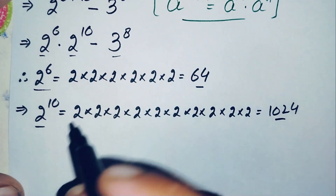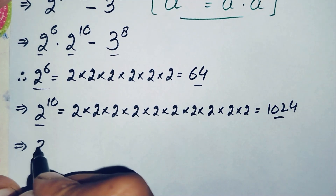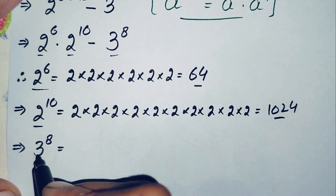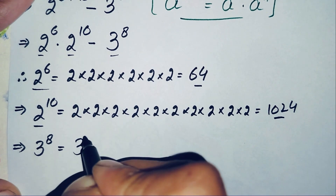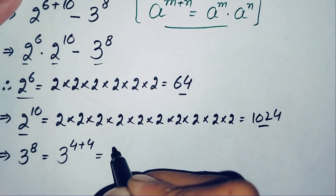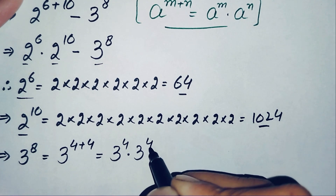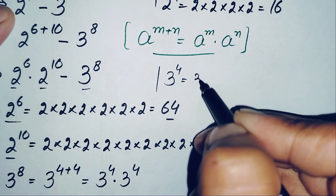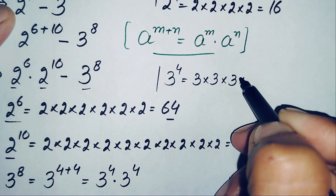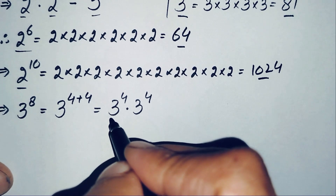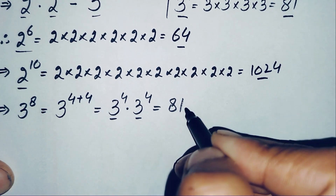Next, we find the value of 3 raised to power 8. Instead of multiplying 3 eight times directly, we simplify by writing 8 as 4 plus 4, so 3 raised to power 8 equals 3 raised to power 4 times 3 raised to power 4. For 3 raised to power 4: 3×3=9, 9×3=27, 27×3=81. So 3 raised to power 4 is 81, and therefore 3 raised to power 8 is 81 times 81.